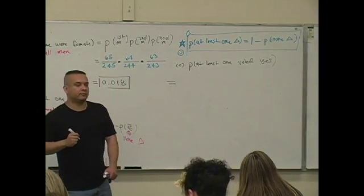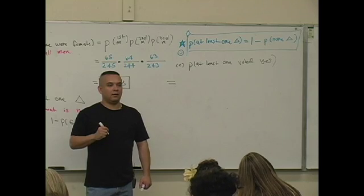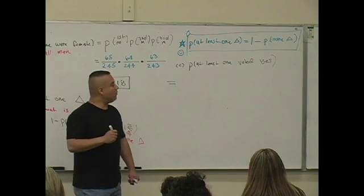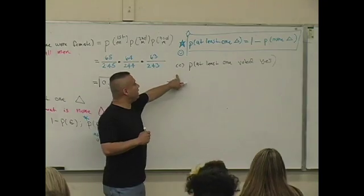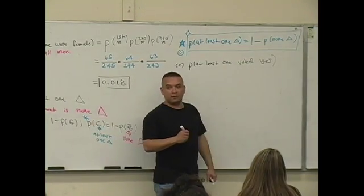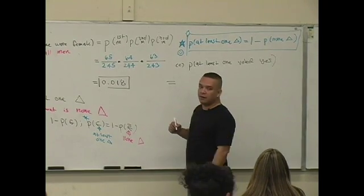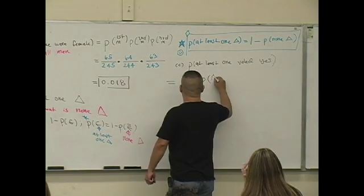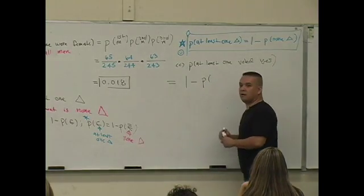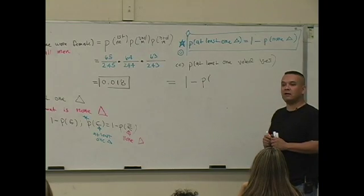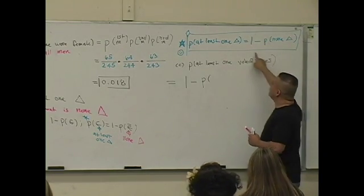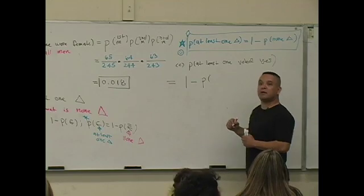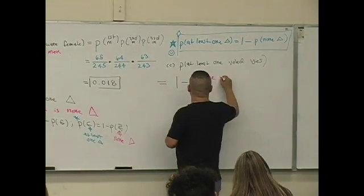What does that equal? No. What do I write down? The probability that at least one voted yes is one minus the probability of what? I'm writing down every gory detail. The probability at least one voted yes is one minus the probability of what? None. Good.